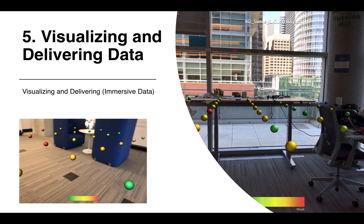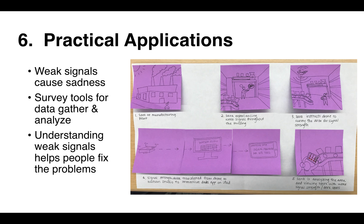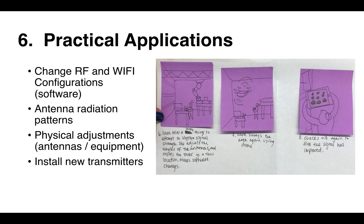The automation of, for example, using a drone to fly a grid pattern — done correctly, you could probably re-survey a room in less than 8 or 10 minutes. That's another area to poke at and explore. The practical applications: weak signals cause sadness. Survey tools for data gathering and analysis help people fix the problem. Once signal strength data is transferred into Watson Studio and immersive data, Sarah can analyze the area and take corrective action.